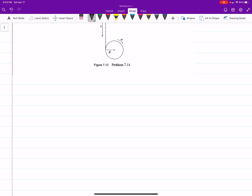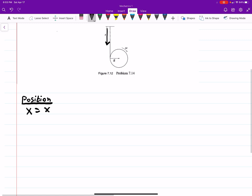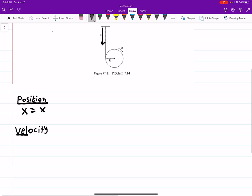So the way that we do this is we're going to start with our position. The one we're interested in is x, and x is just equal to x. We're interested in the x-axis, which is positive going down. And the velocity is just the time derivative of position. So x dot is equal to x dot. Just take the time derivative of position.